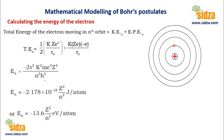When you substitute the values for the constants—where Z is the atomic number and n is the number of the stationary orbit (first, second, third, fourth)—we get: E = negative 2.178 × 10⁻¹⁸ × Z²/n² joules per atom. In terms of electron volts, it is negative 13.6 × Z²/n² eV. These are the two most commonly used equations.